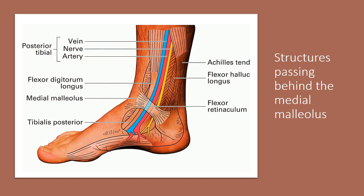The structures passing behind the medial malleolus through the tarsal tunnel, from anterior to posterior, are: the tendon of tibialis posterior, the tendon of flexor digitorum longus, and then three structures — the posterior tibial vein, posterior tibial artery, and posterior tibial nerve — and finally the flexor hallucis longus. These structures all pass underneath the flexor retinaculum, also called the tarsal tunnel.